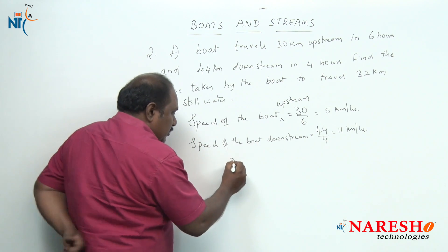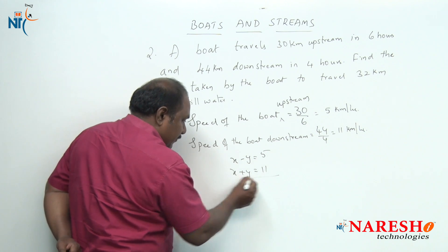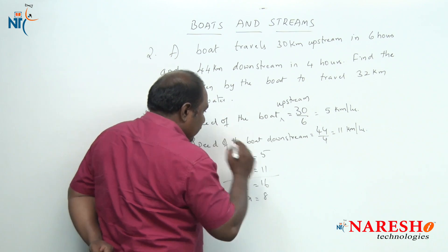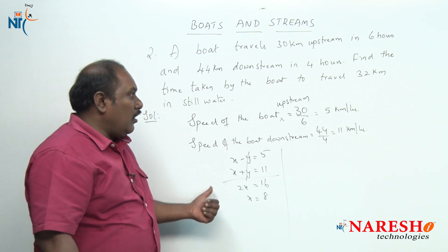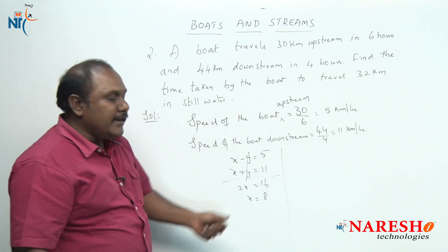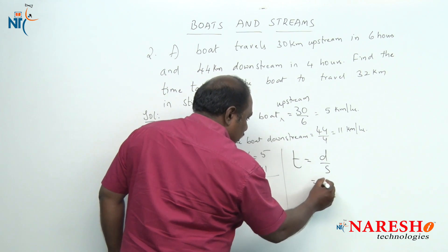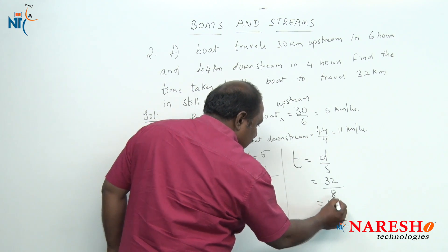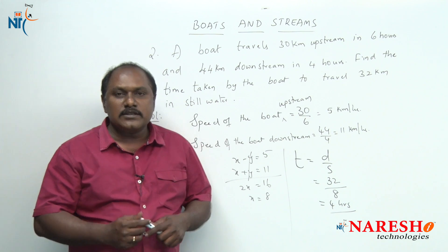From the given information, x minus y equals 5 and x plus y equals 11. Solving this, we get 2x equal to 16, or x equal to 8. The speed of the boat in still water is 8 kilometers per hour. Time taken to travel 32 kilometers in still water equals distance by speed, which is 32 divided by 8, giving 4 hours.